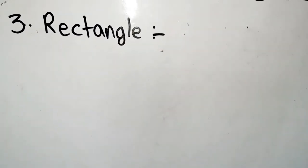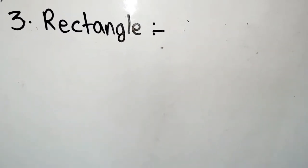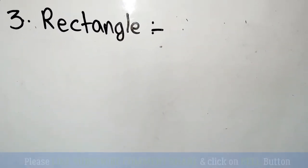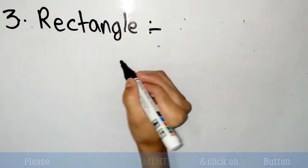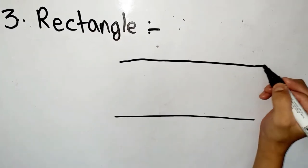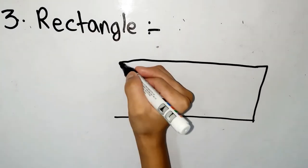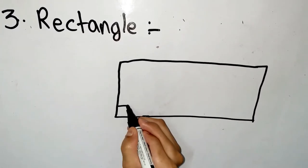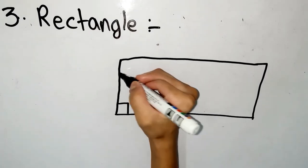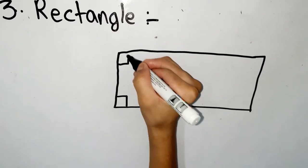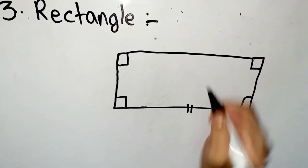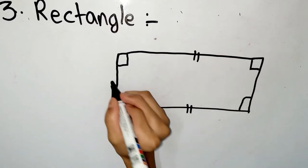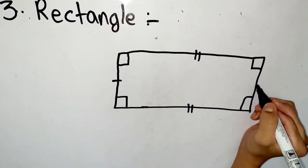A rectangle is a quadrilateral with four right angles — right angle means 90 degrees. This is 90 degrees. This side is parallel to this side, and this side is parallel to this side.